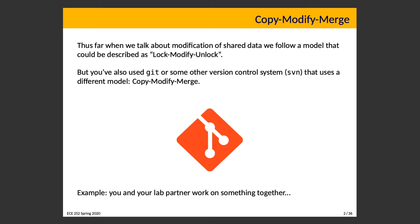That works reasonably well and we're quite familiar with it, but we're also familiar with another kind of concurrency. If you've used Git — which at this point you should have for the assignments in the course — or maybe Subversion on a co-op term, that would be a similar thing. It's a version control system that follows the model: copy, modify, merge. Let's take a minute to talk about that.